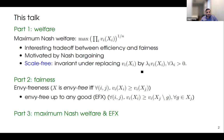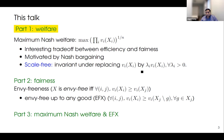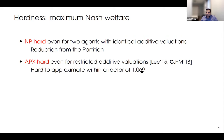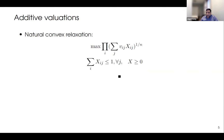Starting with the bad news: maximizing Nash welfare is a very hard problem. It is NP-hard even for two agents with identical additive valuations — we can reduce the partition problem to this. It is also FPX-hard even for restricted additive valuations. And it is hard to approximate within a factor of 1.069. So this is a hard problem. Let's first get started with additive valuations.